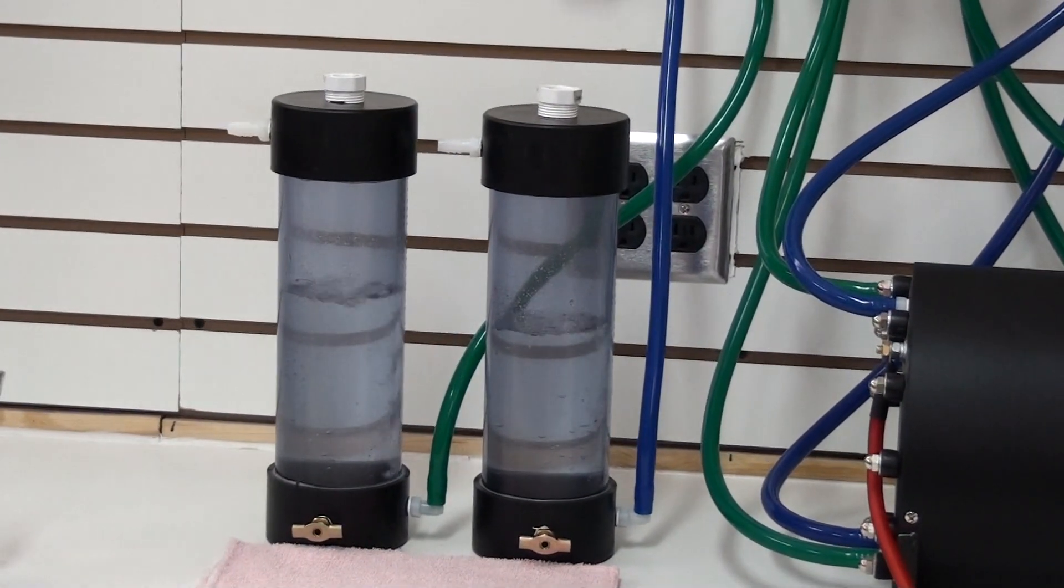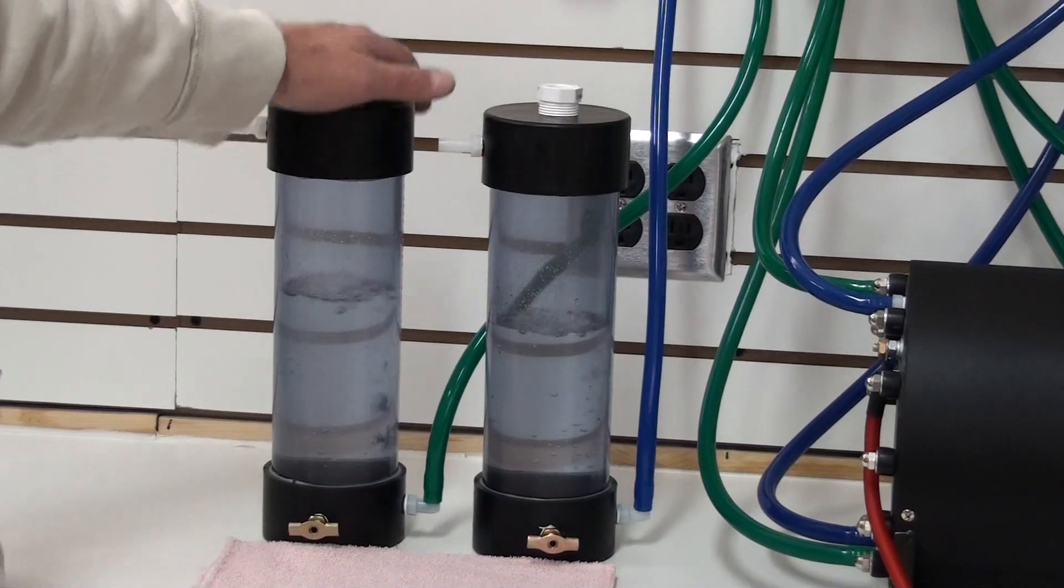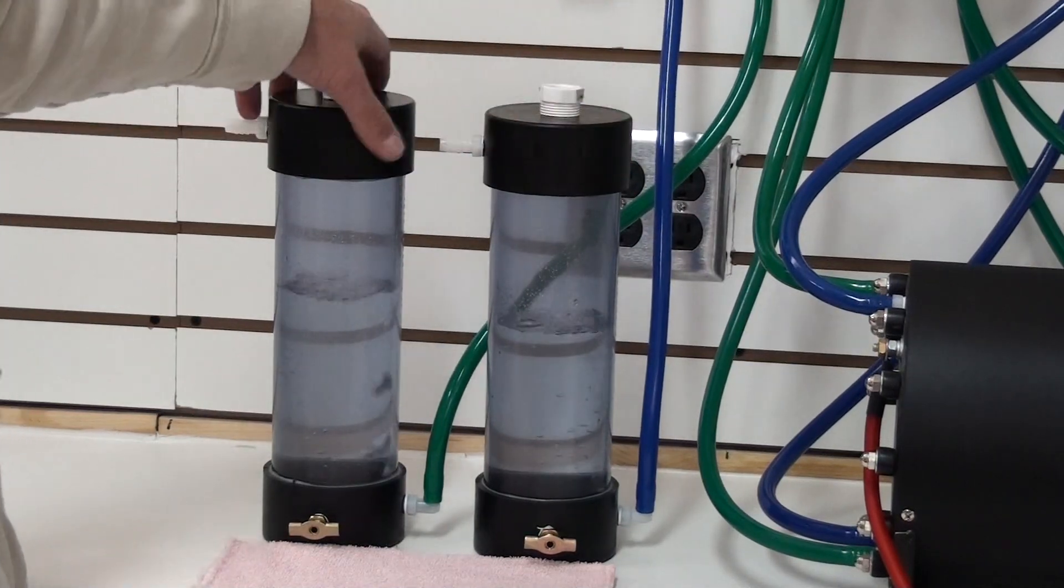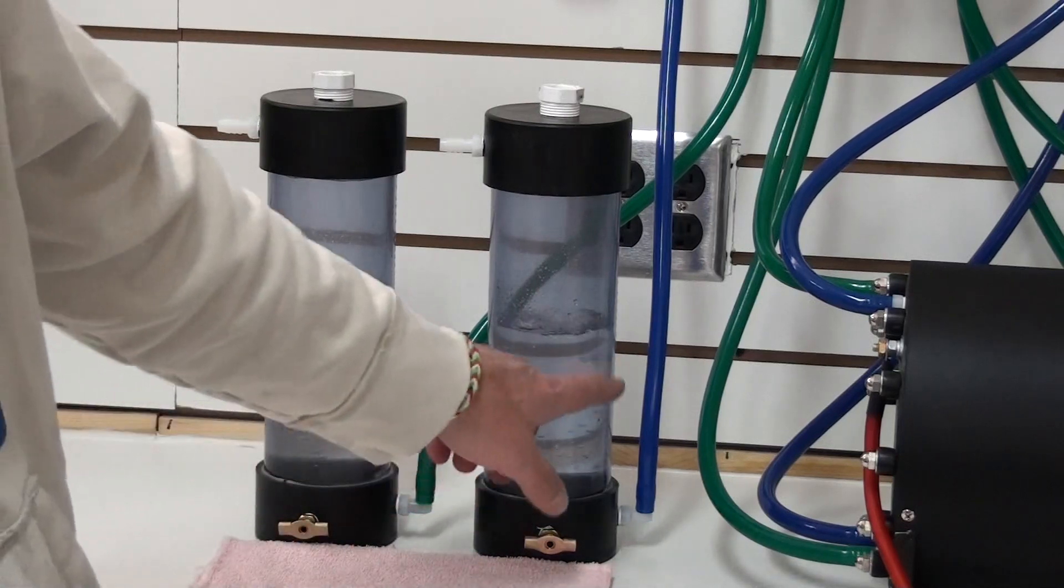These are the bubblers that we use for this system. This is the hydrogen bubbler and this is the oxygen bubbler. And you can see that right now the cell is on and we're producing hydrogen and oxygen.